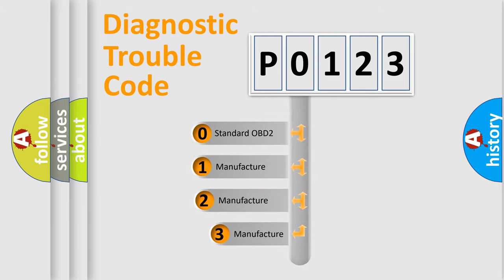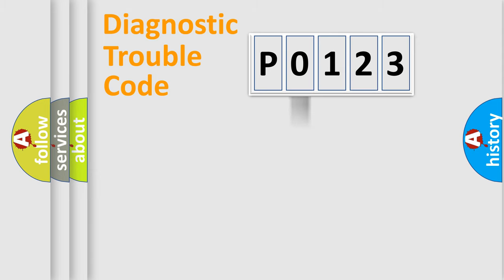If the second character is expressed as 0, it is a standardized error. In the case of numbers 1, 2, 3, it is a more precise expression of the car-specific error.